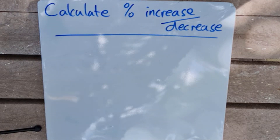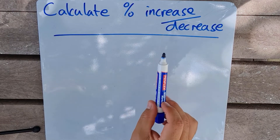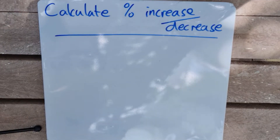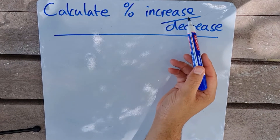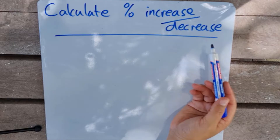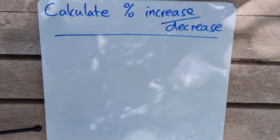Hi there learners and welcome to today's video where we are going to be talking about how we can calculate the percentage increase or decrease. It's important to be able to compare quantities in terms of percentages. One method is to look at the percentage by which a value has either increased or decreased, and there are three different methods we can use to get our answer.